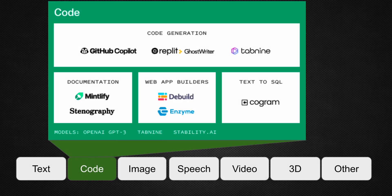The next segment is code. Over the last several months, we have already seen GitHub Copilot come out of beta and become available for anyone to use. Polycoder is another model which has received significant interest from the market. In other spaces outside code generation, such as building web apps, documentation, and creating SQL from text, open source as well as closed source models are helping newer companies build the foundation of generative AI in the field of code generation.